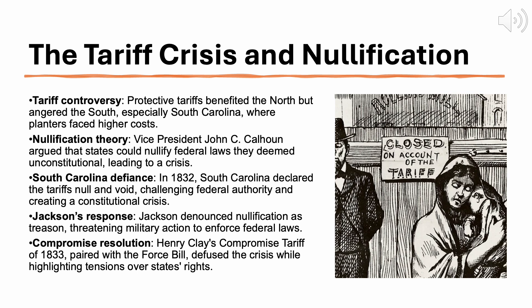Another major crisis during Jackson's presidency was the tariff controversy, which culminated in the nullification crisis of the early 1830s. The roots of the conflict lay in the protective tariffs implemented by Congress, designed to shield northern manufacturers from European competition. These tariffs benefited the North, where industrialization was taking root, but were deeply unpopular in the South, where planters relied on the export of cotton to foreign markets. Southern leaders, particularly in South Carolina, argued that the tariff unfairly increased the cost of imported goods. The most controversial was the Tariff of 1828, which southern critics dubbed the Tariff of Abominations. Southern planters feared that if the federal government could impose economic policies that harmed the South, it might one day interfere with the institution of slavery.